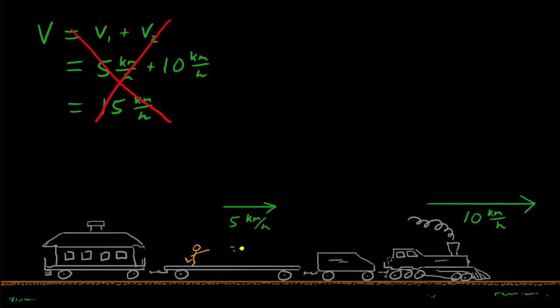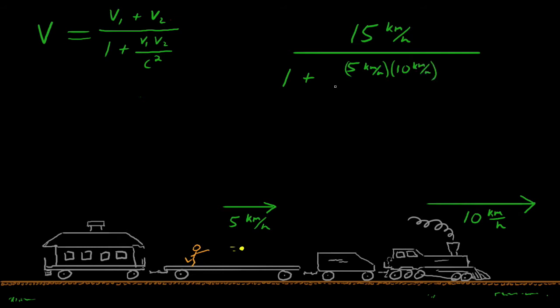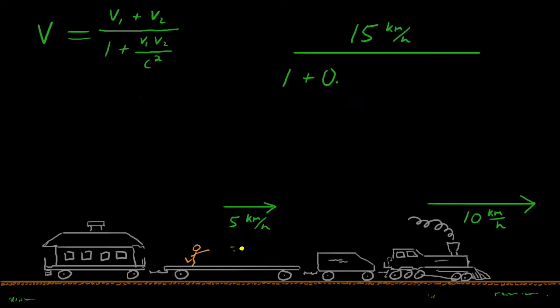Einstein showed us the true way to add velocities together is as follows. Using this equation, you need a denominator that alters the ultimate result. So in the case of you're throwing the ball on the train, technically what you need to do is this. V equals 10 plus 5. That's the numerator, which equals 15. Now for the denominator, it's 1 plus V1 times V2. That's 5 times 10, that's 50, divided by 1,080,000,000 kilometers per hour. That's the speed of light in units of kilometers per hour, not kilometers per second. Then you square that.